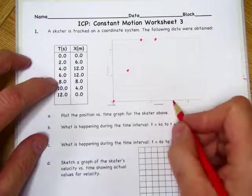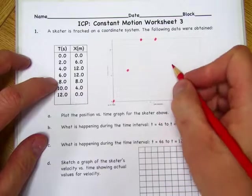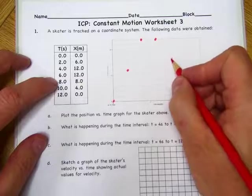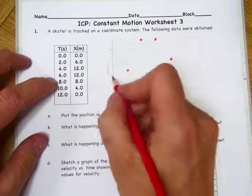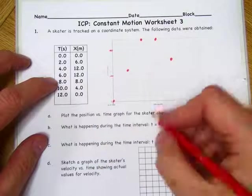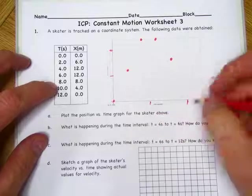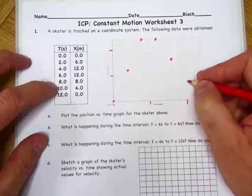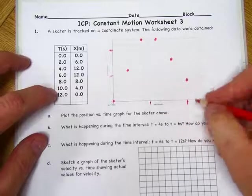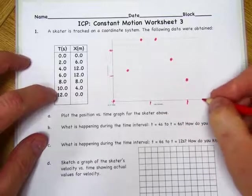At the time of 8 seconds, it was down at position 8. At 10 seconds, it was at position 4. And at 12 seconds, it was at position 0. So it started at 0, moved down a little bit, stood still, moved back, and ended at 0.